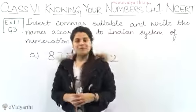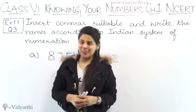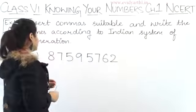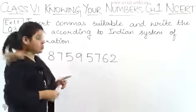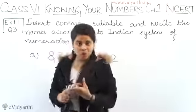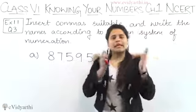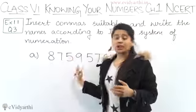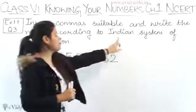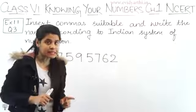Hello guys, this is Mansi from Evitaati.in. We are starting with question number 3, exercise 1.1. In this question we have to insert commas and write the names according to the Indian system of numeration. Numbers are given - first we have to put commas and then write the names. Let's put the commas according to the Indian system of numeration.